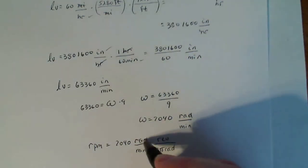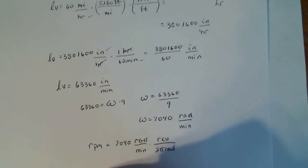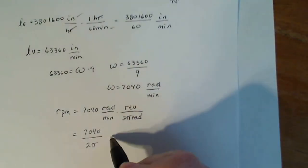So my radians go away, I'm left with revolutions per minute. So 7,040 divided by 2π. Let me move this up, gives me my revolutions per minute, which is my goal.